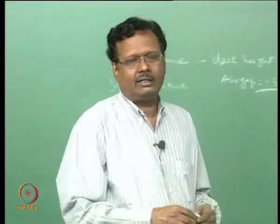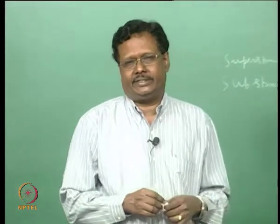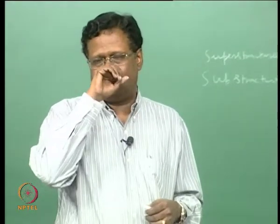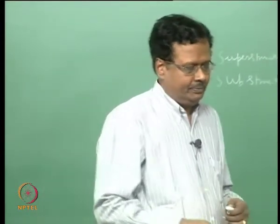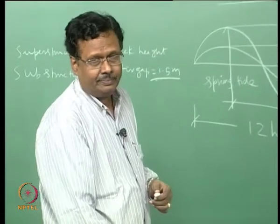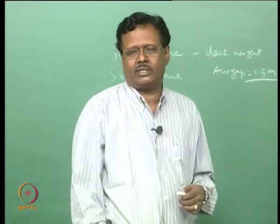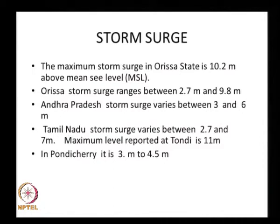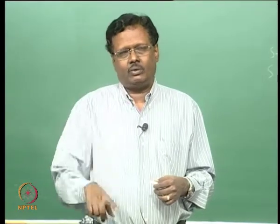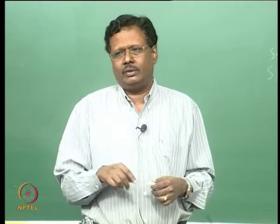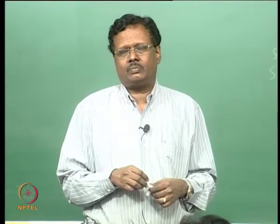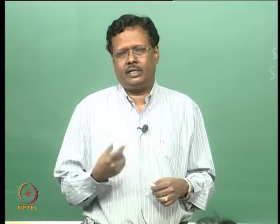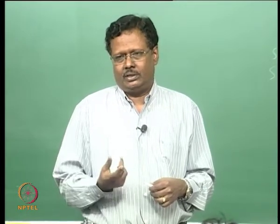If we take Kandla, the top level of the structure is plus 9 meters with reference to chart datum. For Chennai it is plus 5. The cost of the structure also increases. For the same 10-meter draft, the total height above the bed level is 20 meters in Kandla versus 16 meters in Chennai. Cost is proportional to the cube of the height because the bending moment is cubic — it is not a linear relationship.